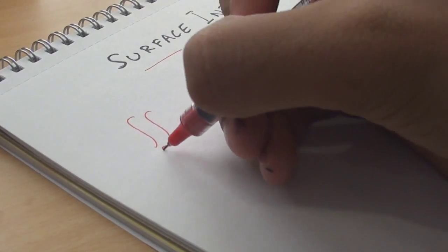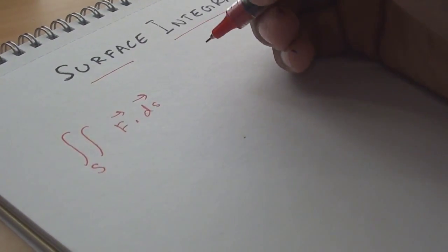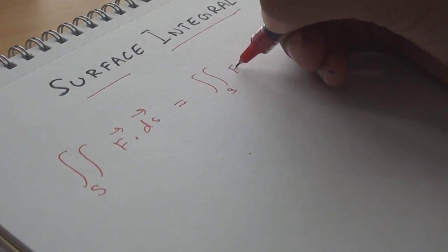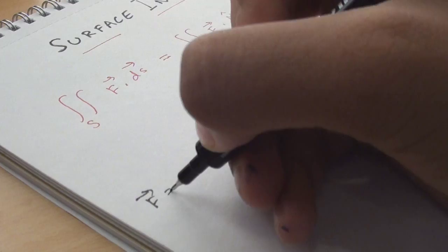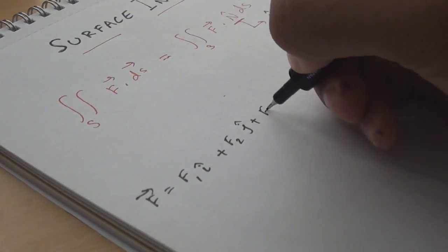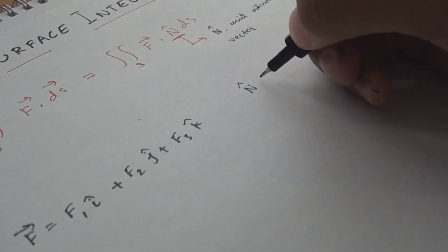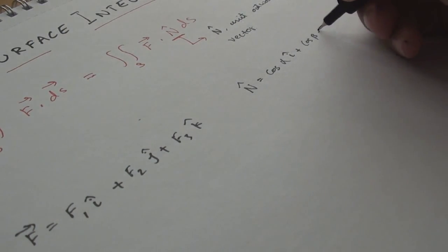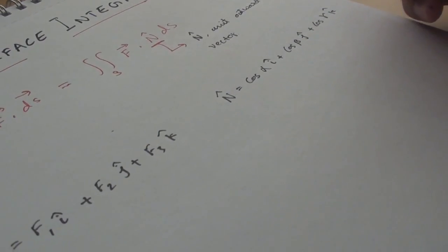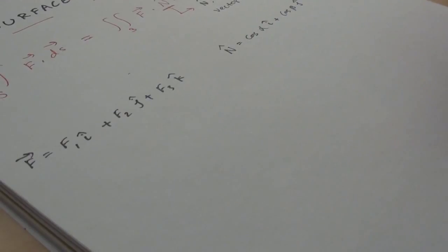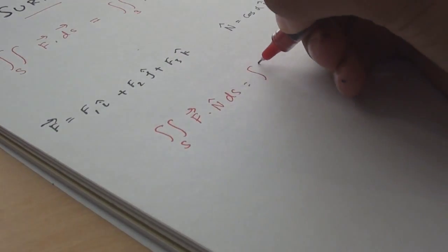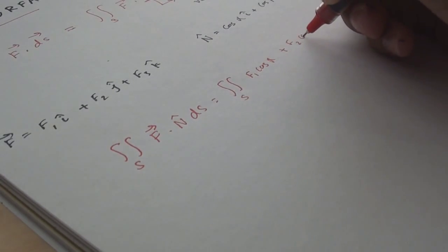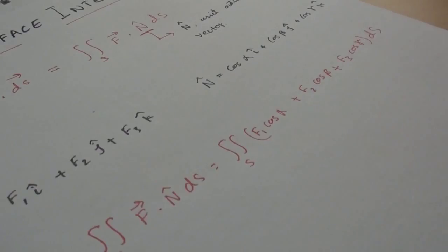The surface integral. We define the surface integral over s by double integration of f ds or the double integration of f·n ds where n is the unit outward normal vector at a point p to s. If f equals f1i plus f2j plus f3k and n equals cos α i plus cos β j plus cos γ k, where α, β, and γ are the angles between n and the positive direction of the coordinate axis, then the surface integral equals to the double integration of f1 cos α plus f2 cos β plus f3 cos γ ds.